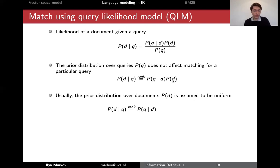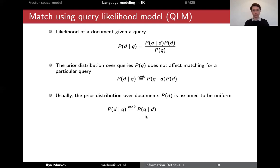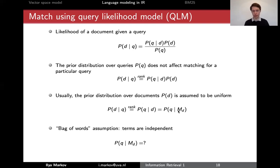If we assume the prior to be uniform and drop it, then the probability of a document given a query is rank equivalent to the probability of a query given a document. This is what we call the query likelihood model — it is the likelihood of a query given a model of a document.